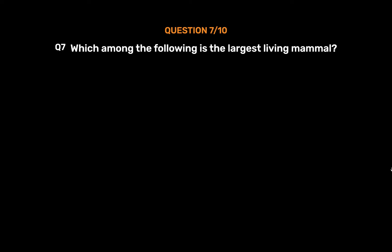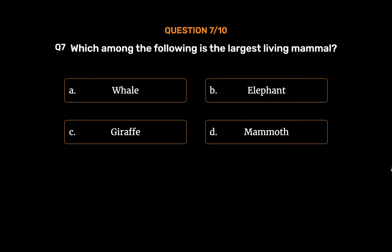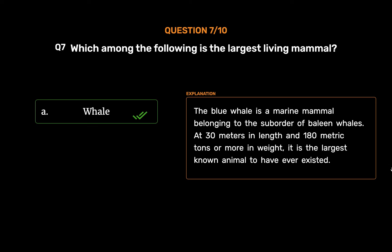Question No. 7. Which among the following is the largest living mammal? Option A: Whale. Option B: Elephant. Option C: Giraffe. Option D: Mammoth. The correct answer is Option A: Whale. The blue whale is a marine mammal belonging to the suborder of baleen whales. At 30 meters in length and 180 metric tons or more in weight, it is the largest known animal to have ever existed.